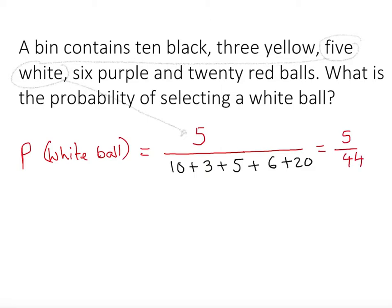Once we have 5 out of 44, we don't want to leave our answer as that fraction. This is not an easy to understand fraction. So what we're going to do is convert to decimal. We can say 0.114.